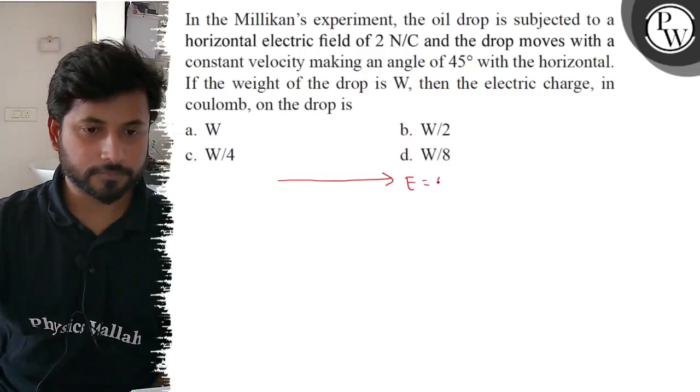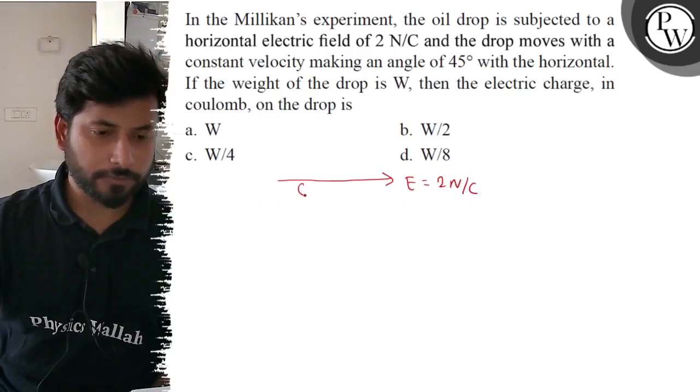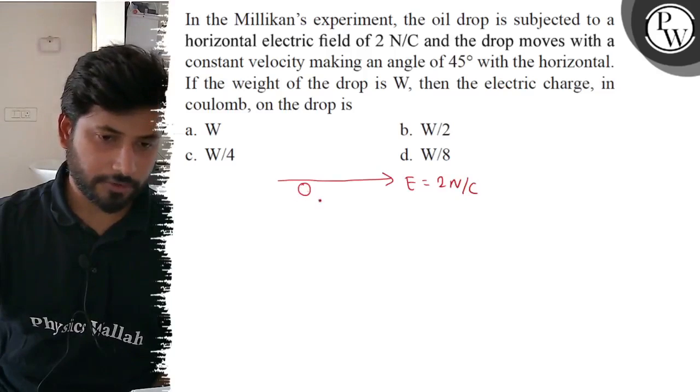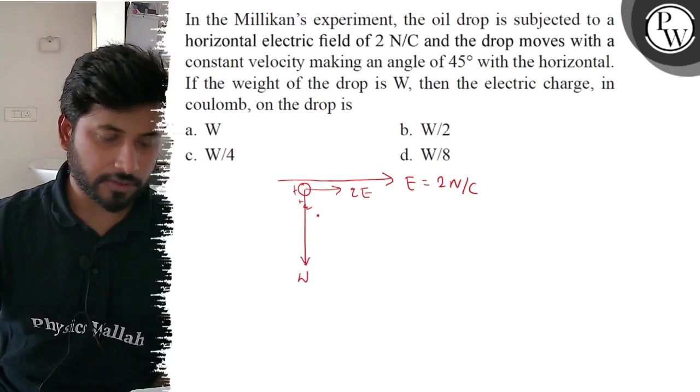So this is the electric field, 2 N per coulomb, and the drop is here. If there is a charge on the drop, there is force in the direction of the field, and the force of the weight acts downward.